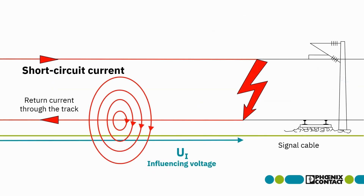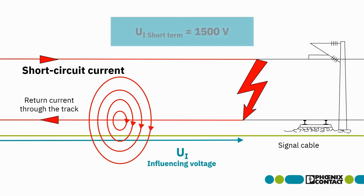In the special case of a short circuit, for example due to a crack in the overhead line, the significantly higher short circuit current also induces a significantly higher voltage. This so-called short-term influencing voltage is defined as a maximum of 1500 Volt.